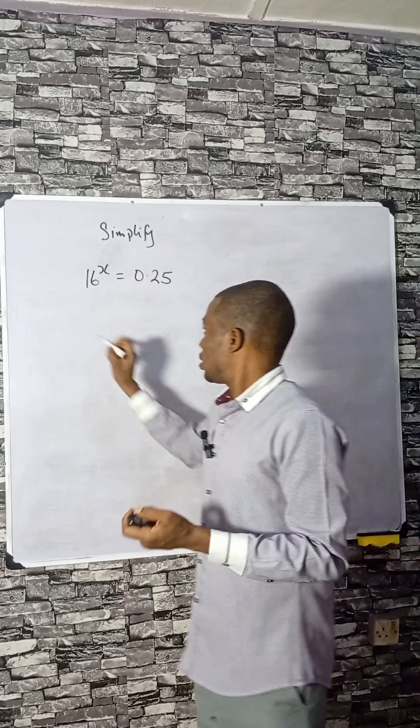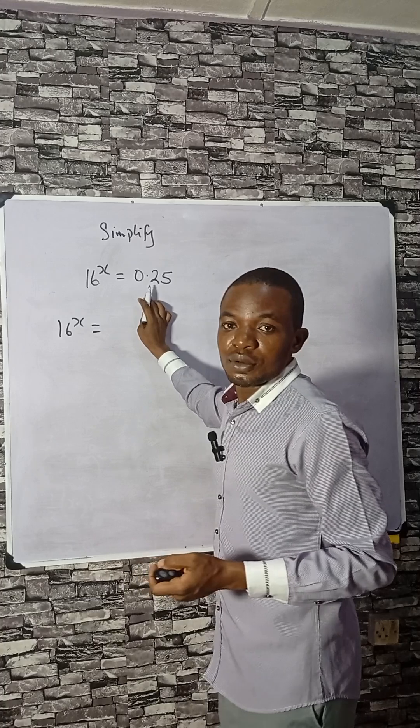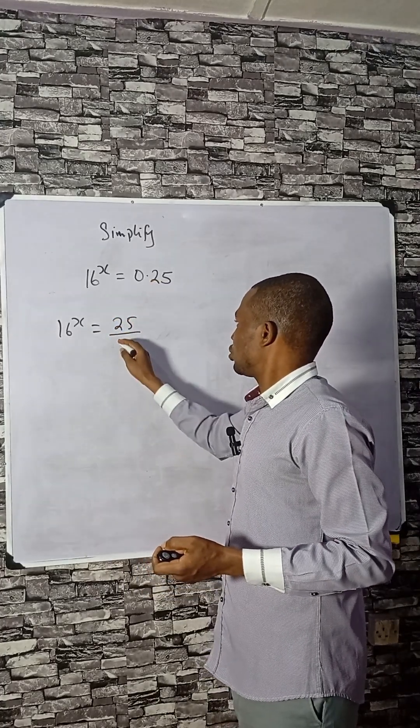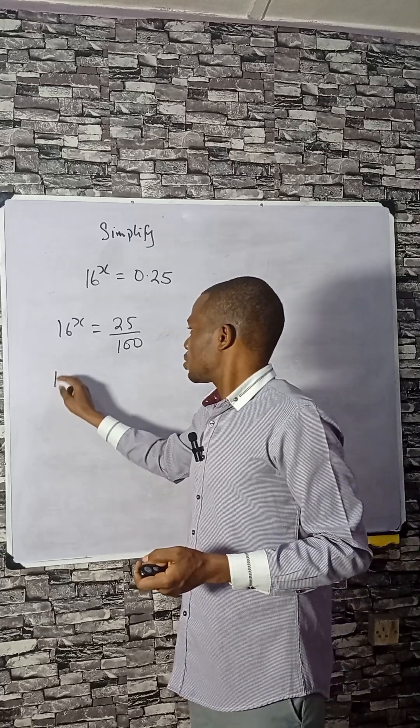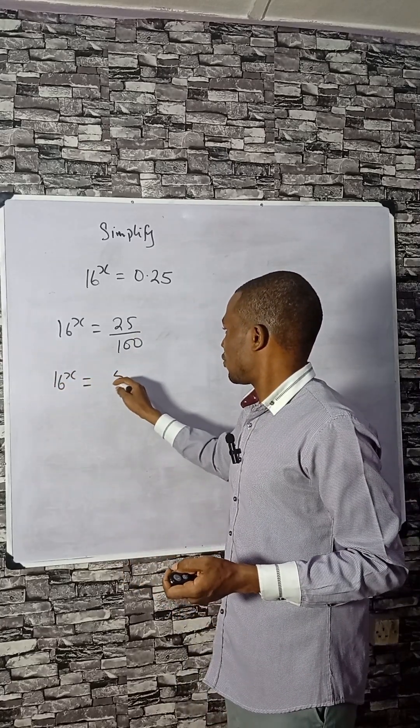Let's simplify this. 16 raised to power x equals 0.25, which can be written as 25 divided by 100. Now, if you check, we can write 25 as 5 squared.